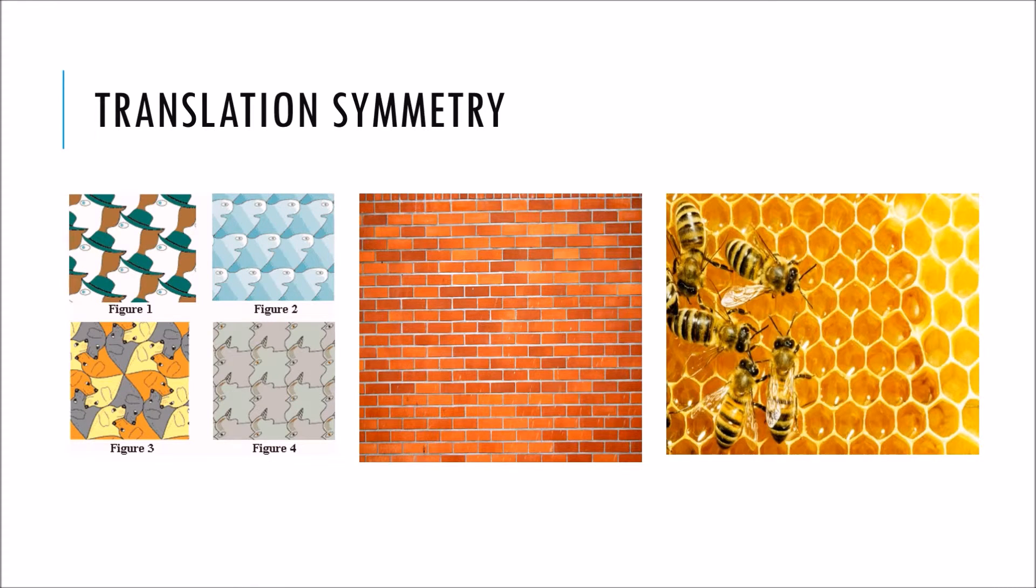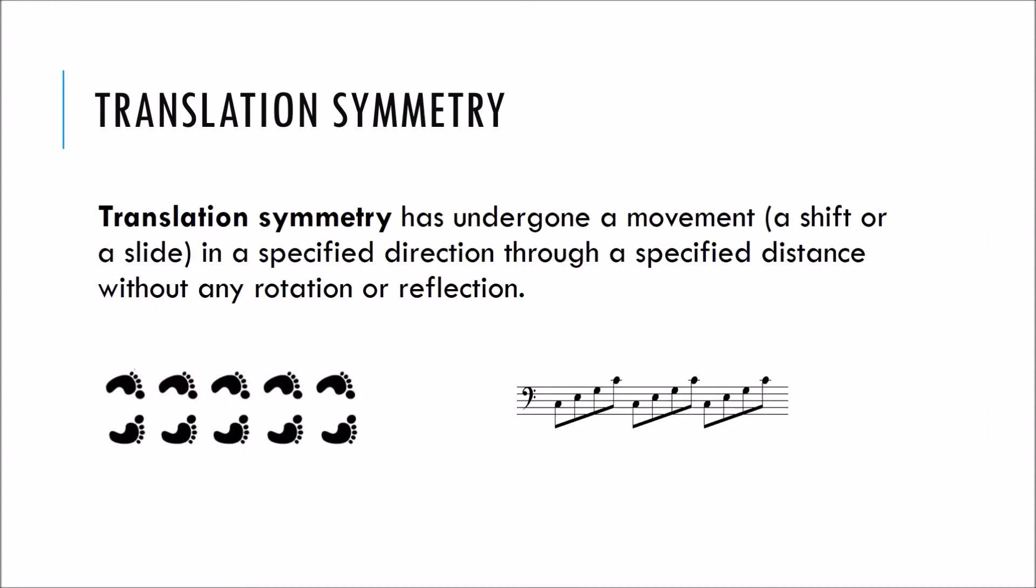Let us take a look at another type of symmetry. Have you ever seen a wallpaper border with a pattern on it? Did you notice that a particular object or group of objects is repeated over and over again? Patterns like this occur in many man-made objects like brick on a house or in nature in things like a honeycomb. We come to understand that translation symmetry has undergone a movement, a shift, or a slide in a specific direction through a specific distance without any rotation or reflection.